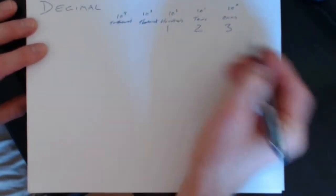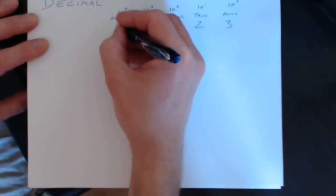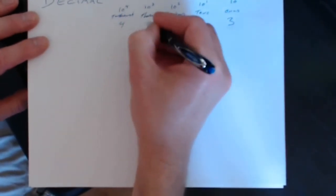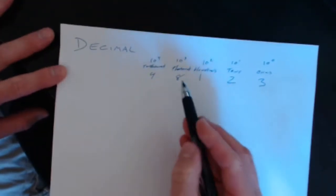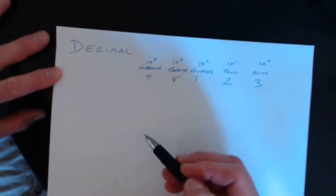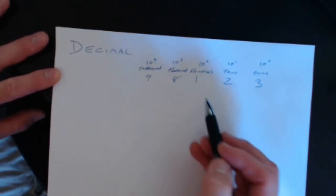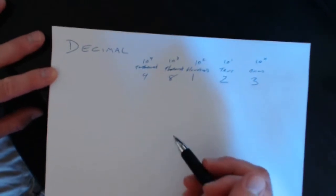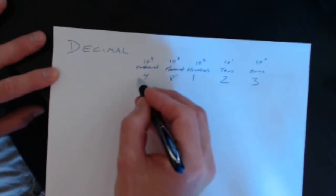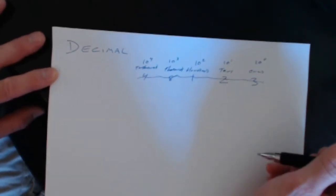So if I had a number like 48,123, that would mean four $10,000 bills — if there were such a thing — eight $1,000 bills, one $100 bill, two $10 bills, and three $1 bills. That's how the decimal numbering system works.